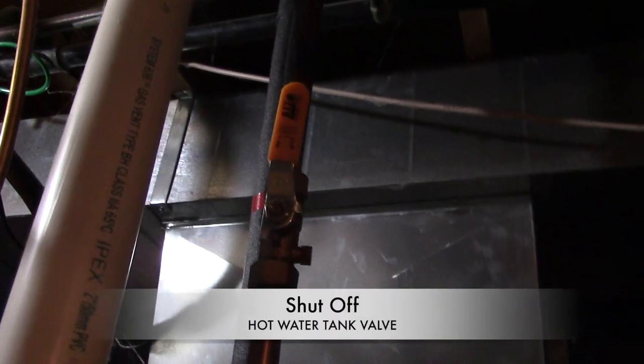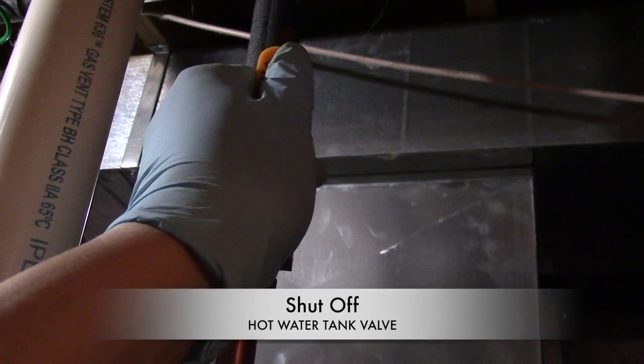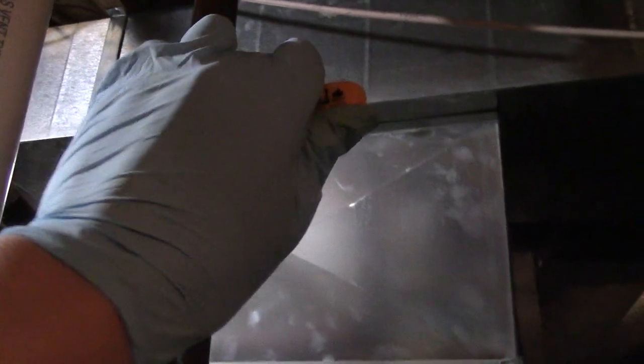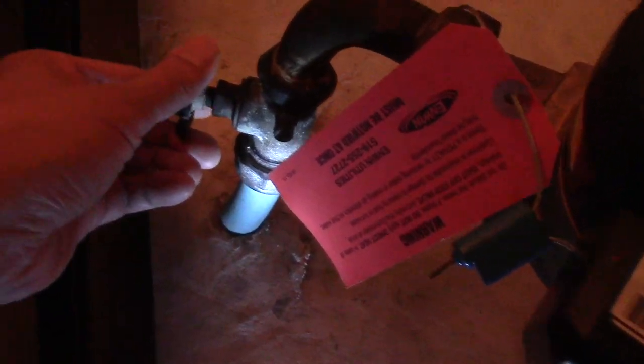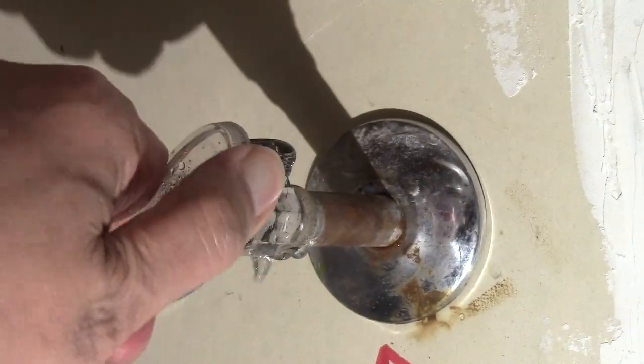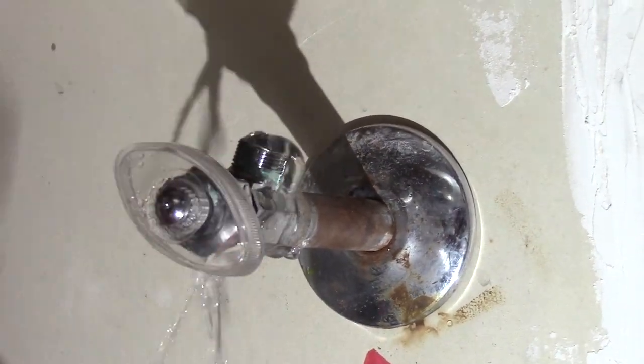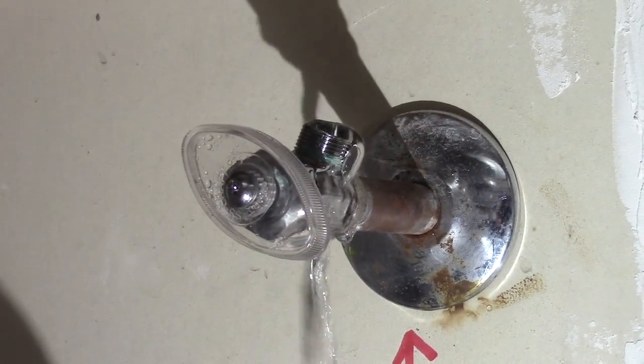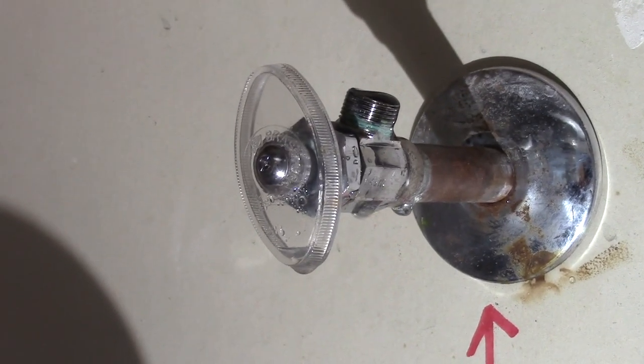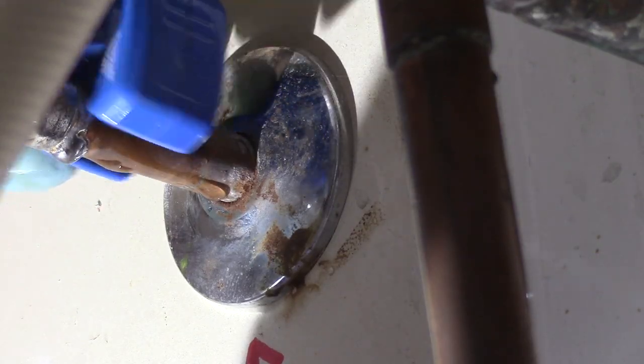Since our only problem comes from the hot water, we will temporarily shut off the pipe coming from the hot water tank. If for some reason you don't have this, you can shut off the main water source. Now you can open up the shut off valve and bleed the hot water. We take our half inch pipe cutter and proceed to cut off the valve. Make sure you have enough room on the pipe to install your new shut off valve.